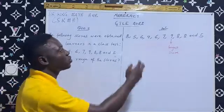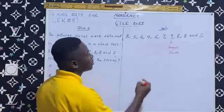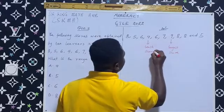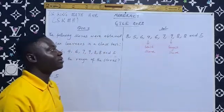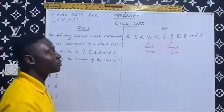And what is the least score from this data set? 4 is the least score.